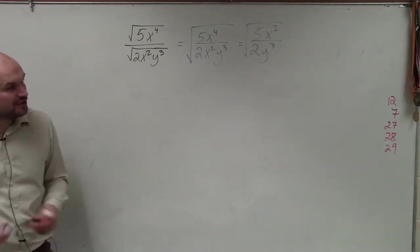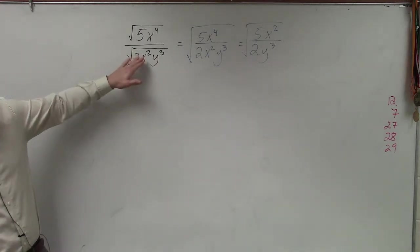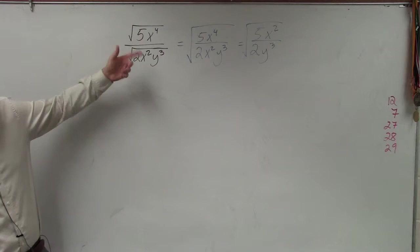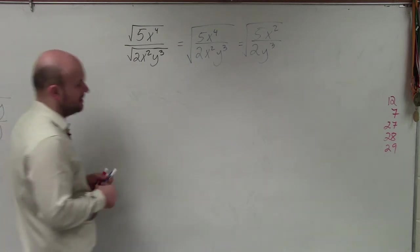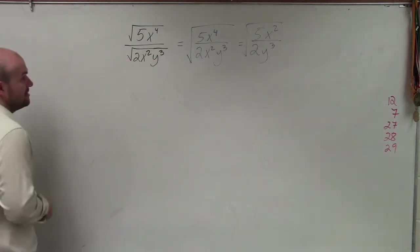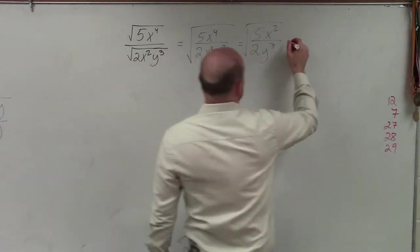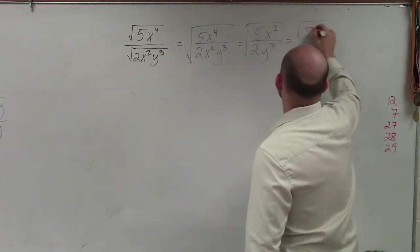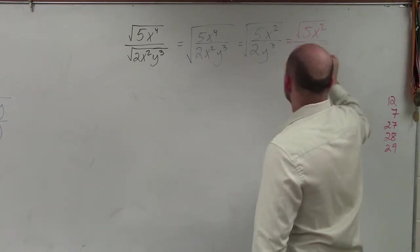But ladies and gentlemen, we can actually further simplify this because when we're dividing, we never want to leave a radical in our denominator. So another way to look at this is you can still kind of keep it that way, there's nothing wrong with that. But if you were to rewrite this, this still looks like this: 5x squared over the square root of 2y cubed.